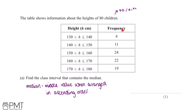Looking at the frequency column: if there are 4 people between 130 and 140 centimetres and 11 people between 140 and 150 centimetres, then there are 15 people between 130 and 150 centimetres. If there are 15 people between 130 and 150 centimetres and 24 people between 150 and 160 centimetres, then there will be 39 people between 130 and 160 centimetres.